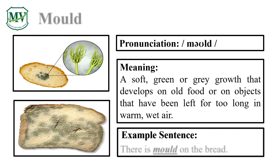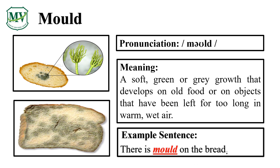Please repeat the word after me. Mold. Good job! Let's spell it. M-O-U-L-D. Mold. Great! There is mold on the bread. Can you try reading the sentence on your own?